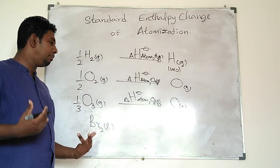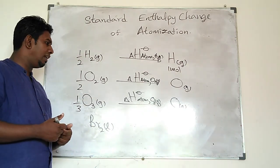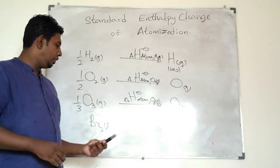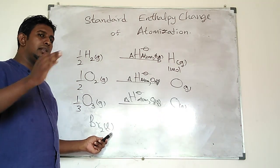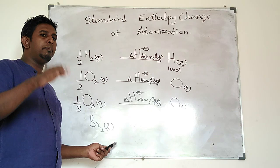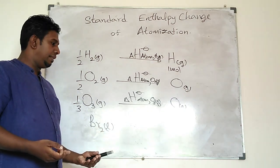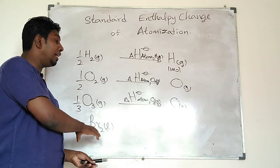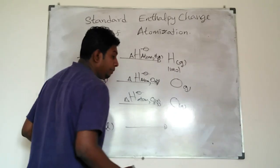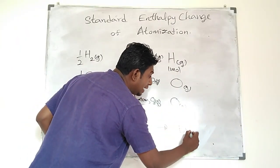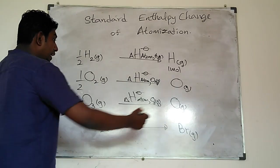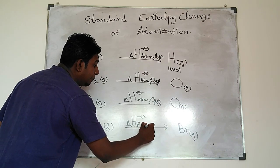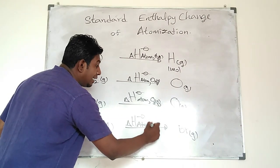Normally, bromine Br2 is a liquid at low temperature. But whatever the physical state it could be found in, you could decide what to use at the beginning — you could even use Br2 gas. It depends on your environment. Whatever it is, it doesn't matter the physical state or molecular form, but it is a must to give one mole of gaseous atoms. That is the standard enthalpy change of atomization.